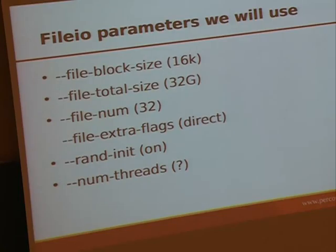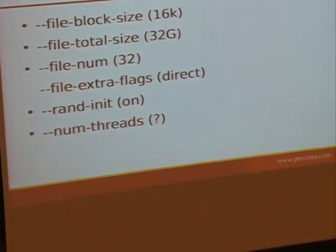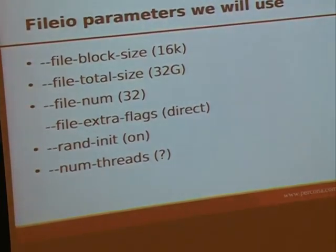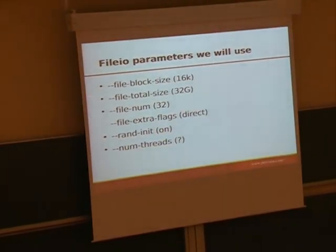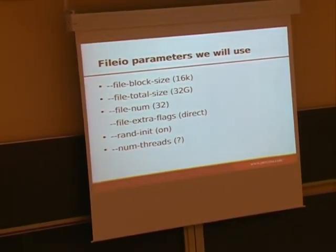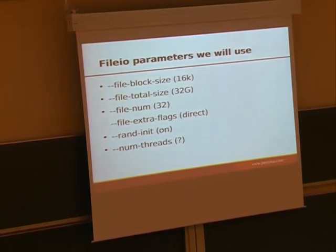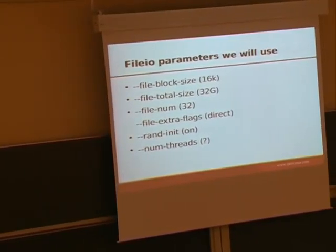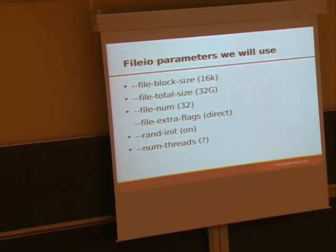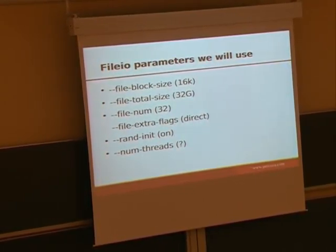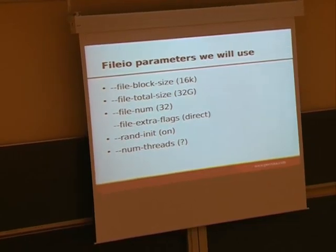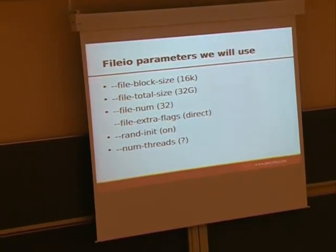There are some parameters we will use within the benchmark. First is the block size — we will use 16k because that's the InnoDB page size. We will use the total size of files and the number of files. The number of files can be important because some file systems, like EXT3 and EXT4, have certain limits on writing to the journal, so if you do it with only one file you may hit that. Databases usually use more files as well. We will use direct IO and we will initialize the pseudo-random numbers at the beginning of the benchmark.